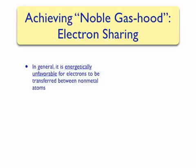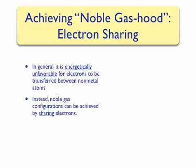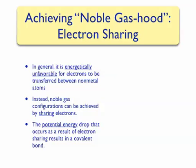However, when two nonmetals interact to form a molecule, it is energetically unfavorable for electrons to be transferred between them. Therefore, they must achieve noble gas configuration in another way — by electron sharing. When electrons are shared between two or more atoms to form a molecule, the potential energy decreases.